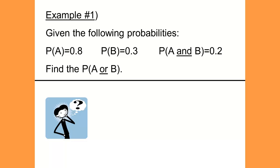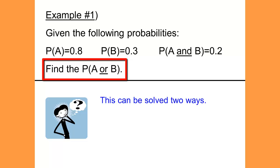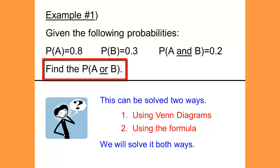Example 1. Given the following probabilities: the probability of A equals 0.8, the probability of B equals 0.3, and the probability of A and B equals 0.2. Find the probability of A or B. This can be solved one of two ways, using Venn diagrams or using the formula, and we will solve it both ways.